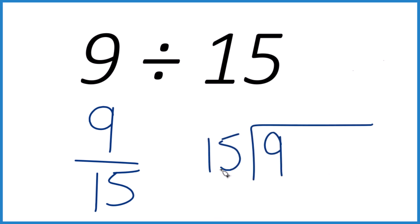15 doesn't go into 9, so we put a decimal point and add a zero here. If we put a decimal point up here, we can treat this like 90.